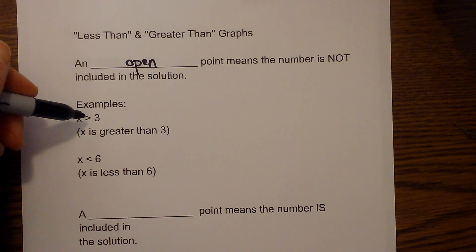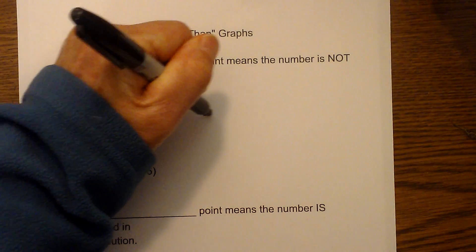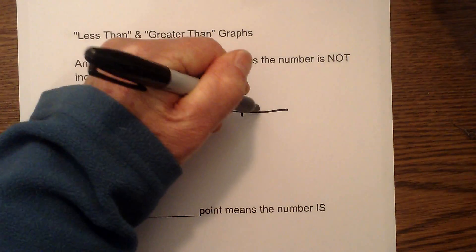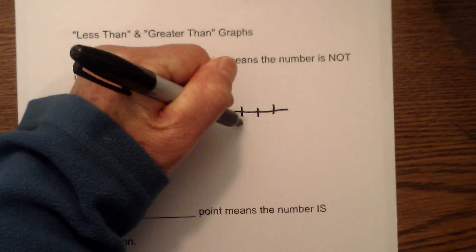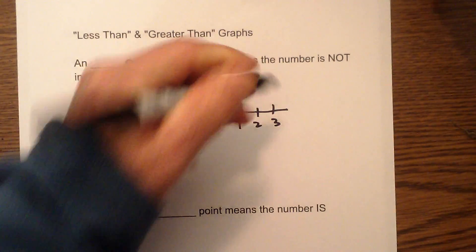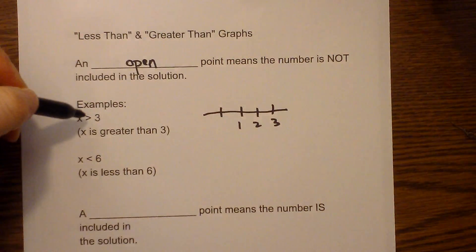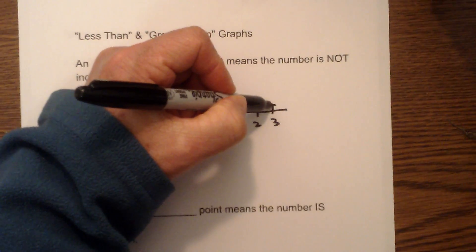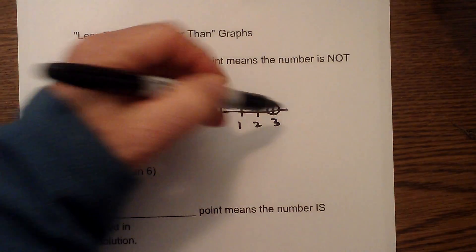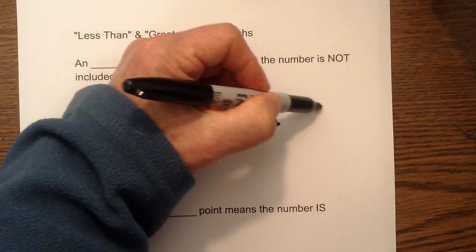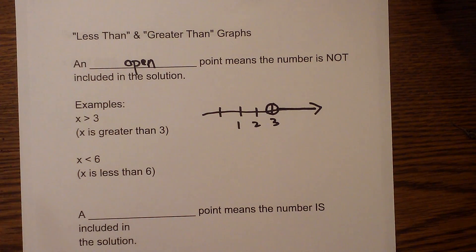For example, x is greater than 3. If we have a number line and we have 1, 2, 3, then what we would do would be greater, but it is not included in the solution, so it would be open, and the arrow would be drawn in that direction.